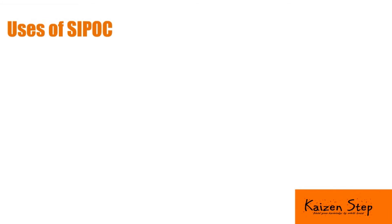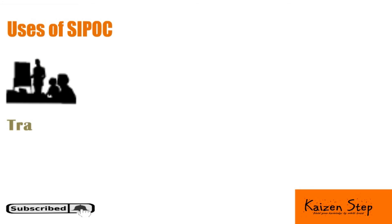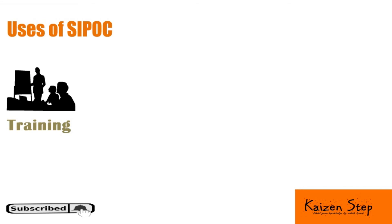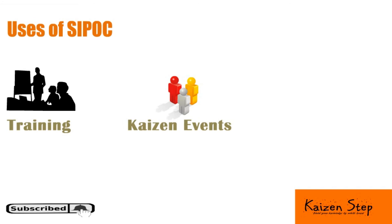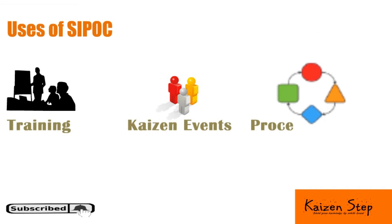Uses of SIPOC: SIPOC may be used for training to give new employees a comprehensive overview of each process. It is also useful in kaizen events, especially when team members are from outside the process. Most importantly, SIPOC helps build detailed process mapping — starting from a high level ensures you don't lose track in a detailed process map.